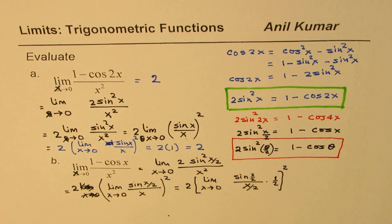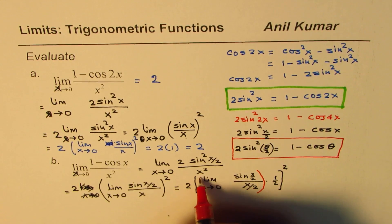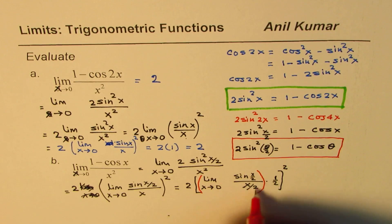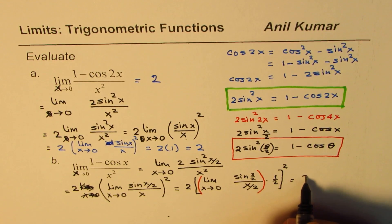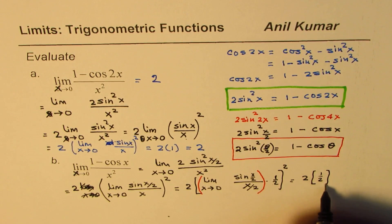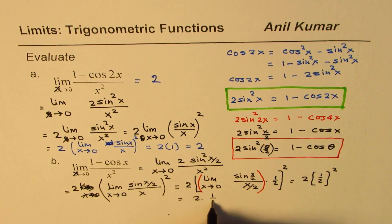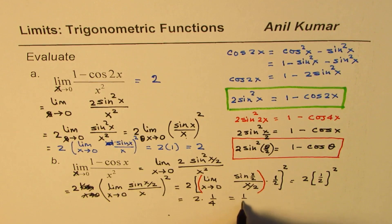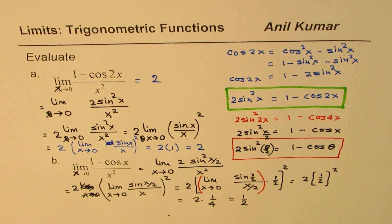Now this portion, as you can see, this portion is 1. And therefore, I could write this as 2 times (1/2)². So that is equals to 2 times 1/4 or is equals to 1/2. So limit of this function is indeed 1/2. That is how you get it. Great.